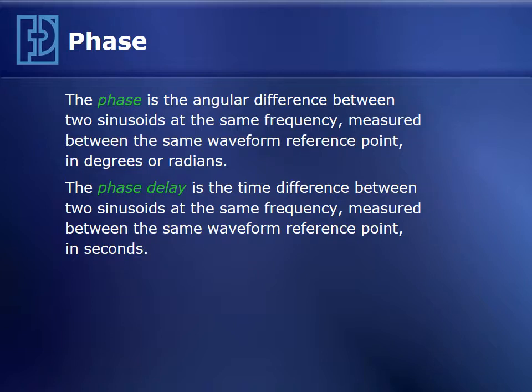Phase is the angular difference between two sinusoids that are at the same frequency and measured between a reference point. It's usually expressed in degrees or radians. Phase delay, on the other hand, is the time difference between two sinusoids at the same frequency and measured at the same reference point on their waveforms. So phase is in degrees, phase delay is in seconds.